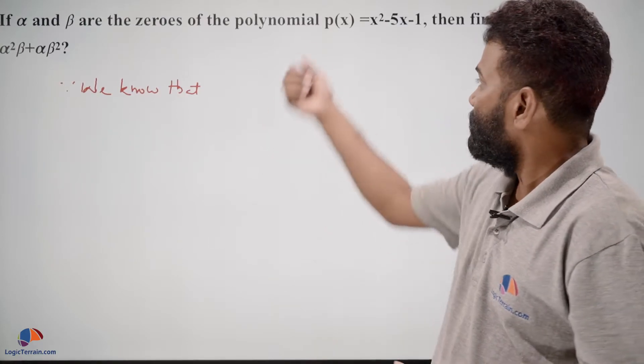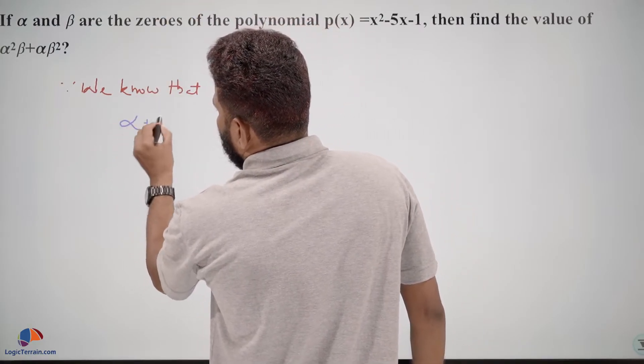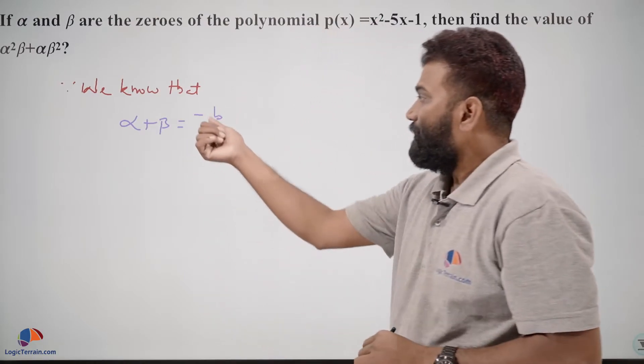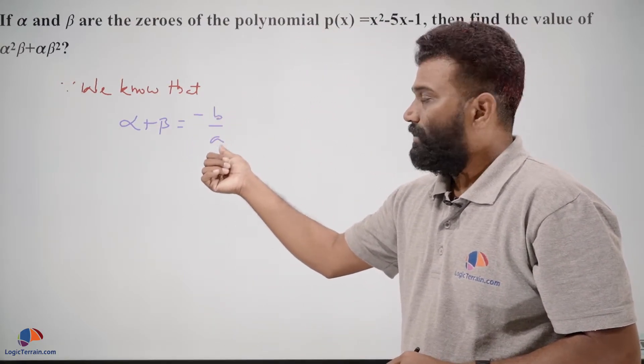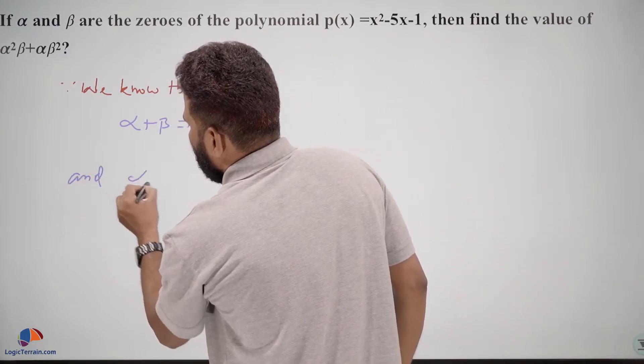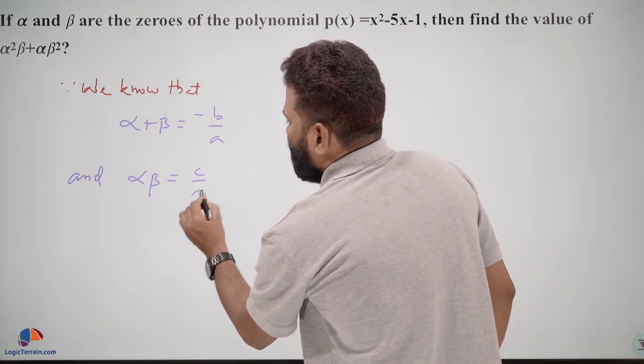For the given polynomial, α + β is equal to minus b upon a, that is minus the x coefficient upon x² coefficient. And α × β, product of zeros, is equal to c upon a, that is constant upon x² coefficient.